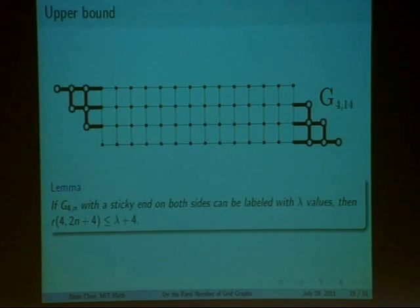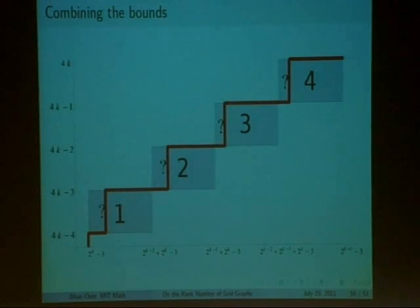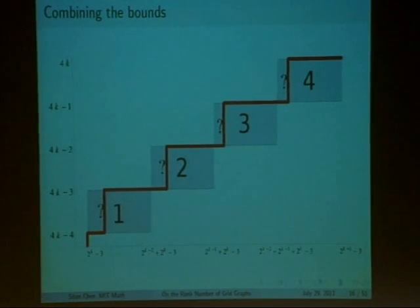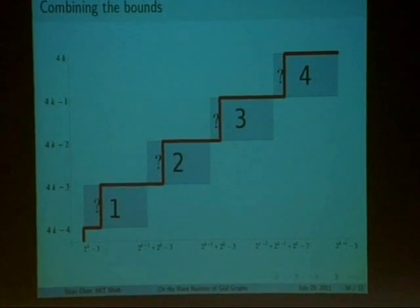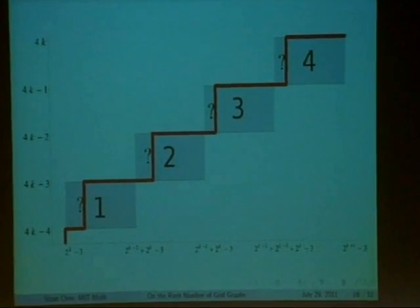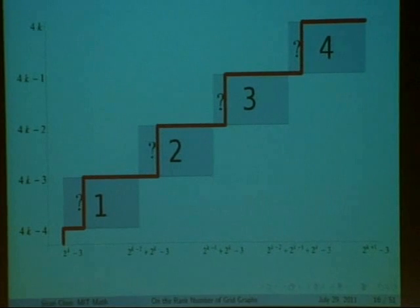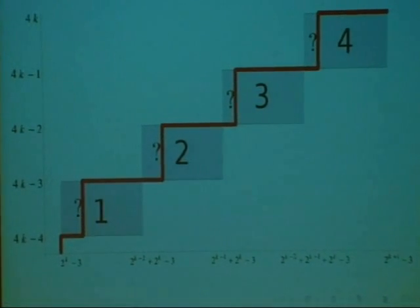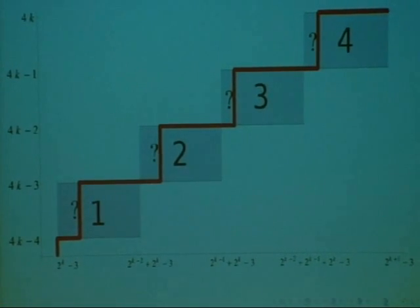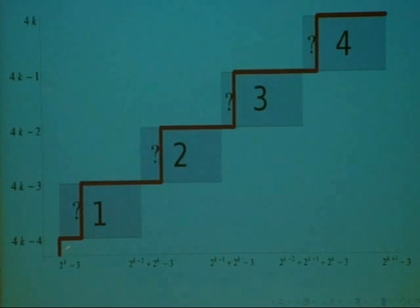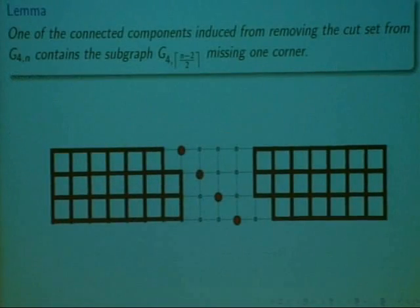This kind of iterative construction actually gives us an upper bound, and once we combine our lower bound and our upper bound, we're left with this staircase-like stair-step bound. You'll see that in each interval in which n resides, the rank number of 4 by n grid will be nestled between two consecutive integers. Now, we're going to proceed using two strong lemmas and a bit of casework in order to find in each interval where the rank number will progress from the lower bound to the upper bound.